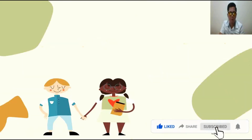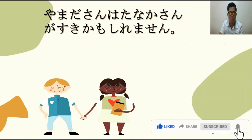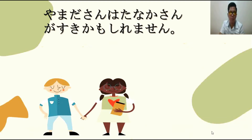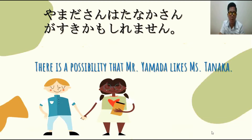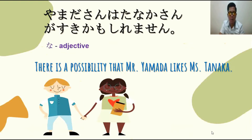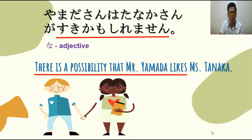Next example: Yamada-san wa Tanaka-san ga suki kamo shirimasen. Ibig sabihin, there is a possibility that Mr. Yamada likes Miss Tanaka. Na-adjective naman yung ginamit natin dito, which is suki. For na-adjective, you have to omit 'na', then plus Kamo Shirimasen. Means, there is a possibility that Mr. Yamada likes Tanaka.